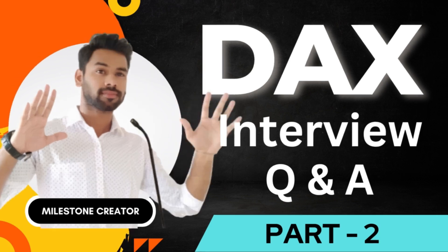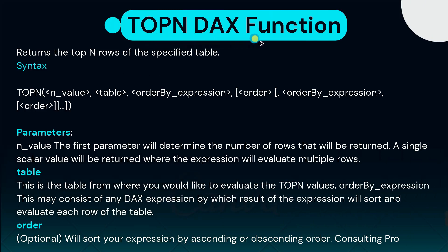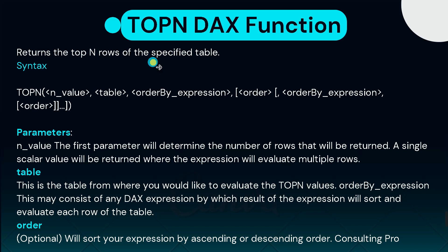The next question is: what is the TOPN DAX function in Power BI? The TOPN function is basically used to return the top N rows of a specified table. For example, suppose we have a table with a hundred records and we want to see only five records from that table — in that case we use the TOPN DAX function.